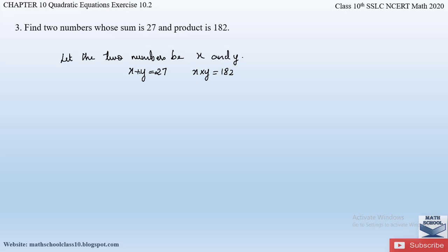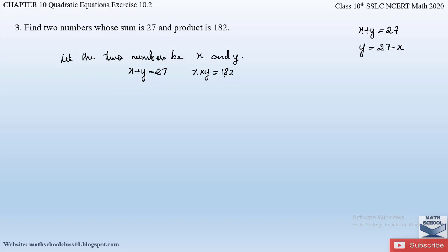From x plus y equals 27, if we send x to the right-hand side we get y equals 27 minus x. Now we substitute this y value into the product equation: x times y equals 182. So instead of y we write 27 minus x.